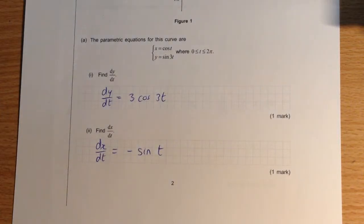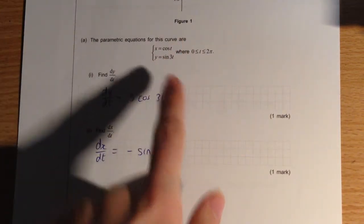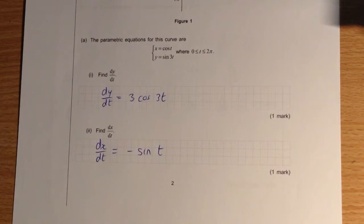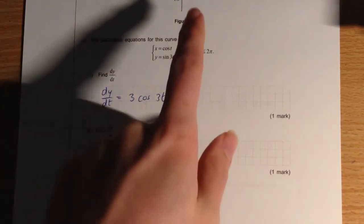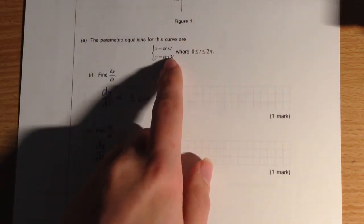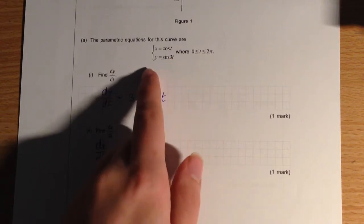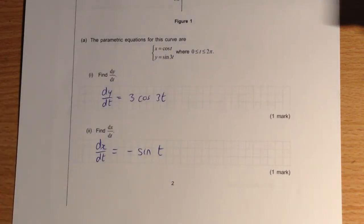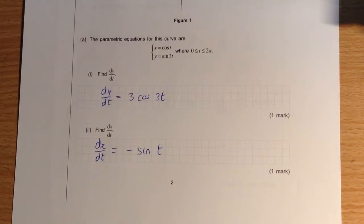The first part of the question looks at finding dy/dt for one mark, and this is simply a matter of applying the basic rules of differentiation to the parametric equation for y. When we differentiate sin 3t, we bring out the constant there and put that in front. So we have 3, and then we differentiate the sine term, so it's cosine, and we end up with dy/dt as being 3 cos 3t.